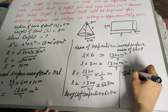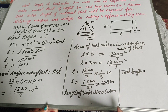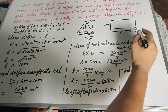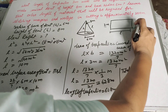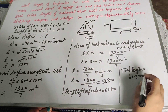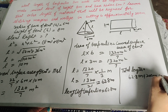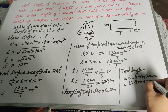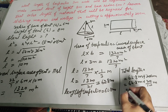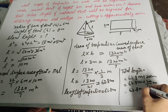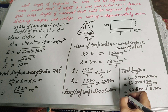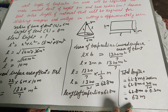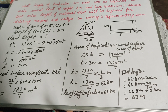Now we find the total length of the tarpaulin. Total length equals length of tarpaulin plus 20 centimeter for the stitching margin. So it is 62.8 meter plus 20 centimeter. Converting centimeter to meter: 62.8 meter plus 20 over 100 meter, which equals 62.8 meter plus 0.20 meter, equals 63.0 meter. So the length of the tarpaulin equals 63 meter.